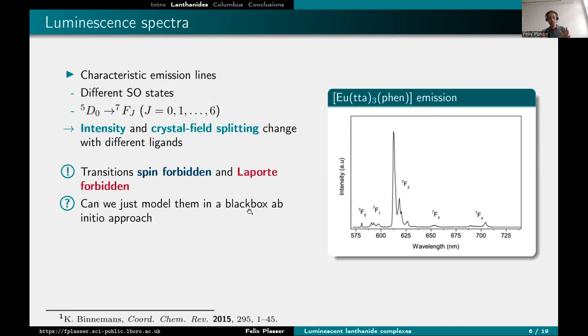Those transitions are forbidden in two different ways. First, they're spin forbidden because you go from a quintet to a heptad, but they're also symmetry forbidden because F orbitals are all odd parity. You go from odd parity to odd parity. So they're forbidden in two different ways. The thing I was wondering about here is if we can still use a black box ab initio approach to model them. Usually people would use some phenomenological theories, something called Judd-Ofelt theory, where you fit things to experiment. But here, I just wanted to see, can we do it ab initio with OpenMolcas?